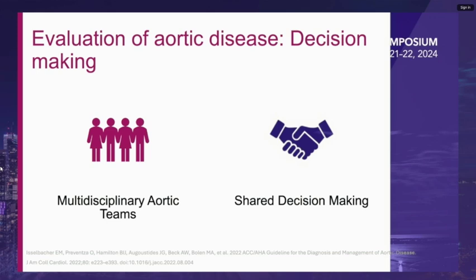Evaluation of aortic disease is concluded by shared decision-making and multidisciplinary aortic teams. It is important to engage the patient as well as other members of the team to come up with an appropriate management plan, especially for complicated disease.